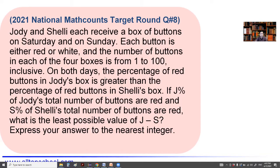On both days, the percentage of red buttons in Judy's box is greater than the percentage of red buttons in Shelly's box. If J percent of Judy's total number of buttons are red and S percent of Shelly's total number of buttons are red, what is the least possible value of J minus S?